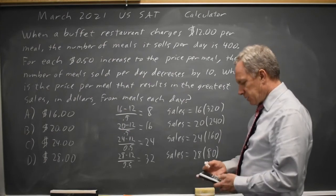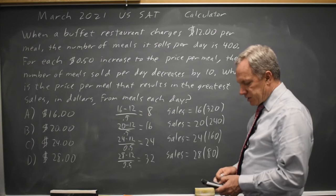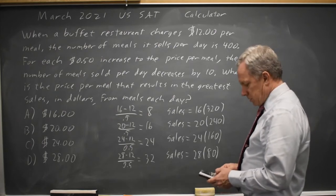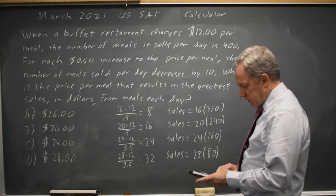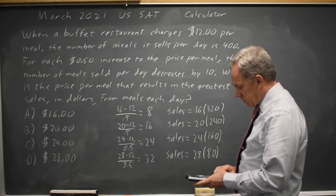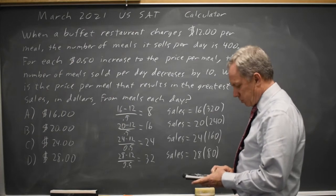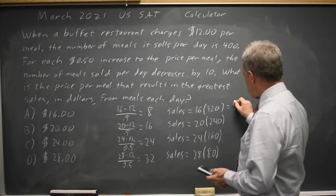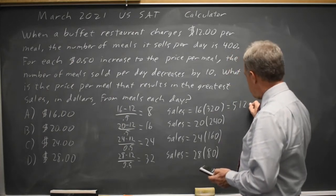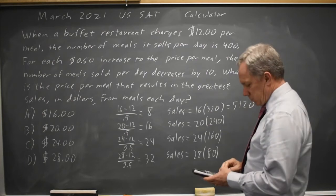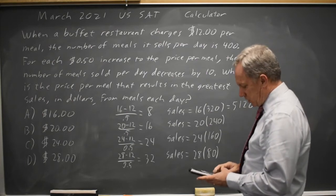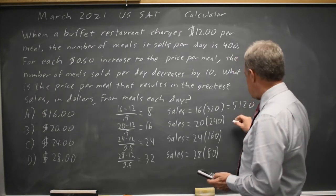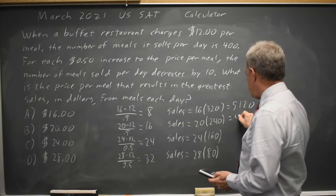Asking my calculator: 16 times 320 is 5120, and 20 times 240 is 4800.